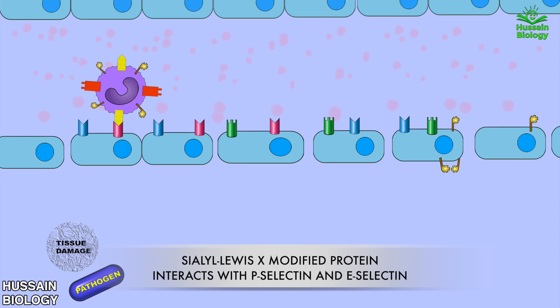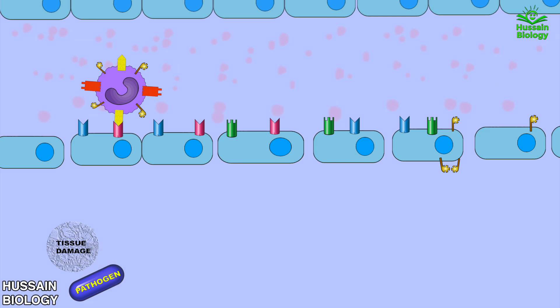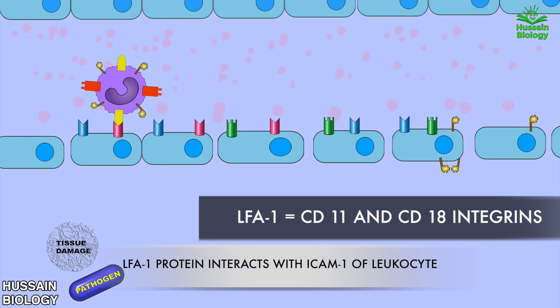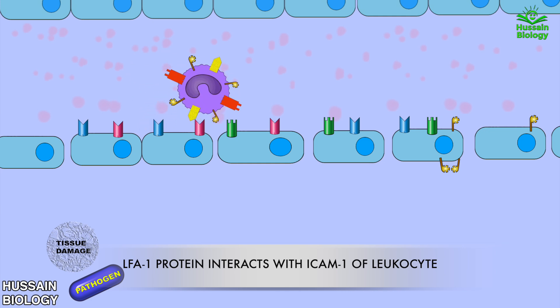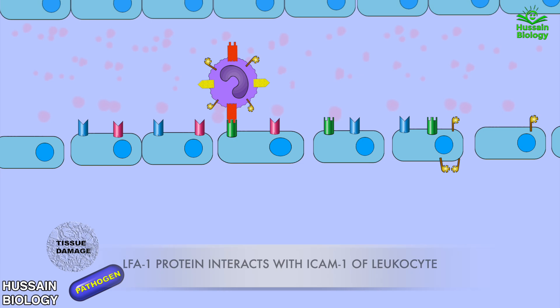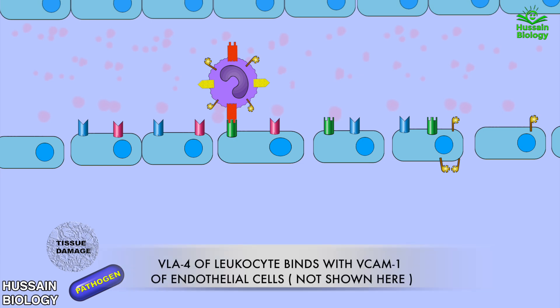From here we have the tight adhesion process, in which the leukocyte firmly binds with the endothelial ligands. The LFA-1 integrin complex of the leukocyte binds with ICAM-1 of the endothelial cells, as shown in the animation. Then the VLA-4 integrin of the leukocyte binds with VCAM-1 of the endothelial cell.